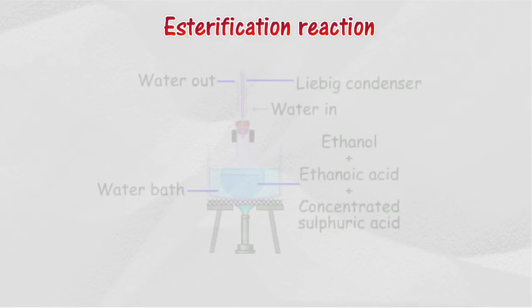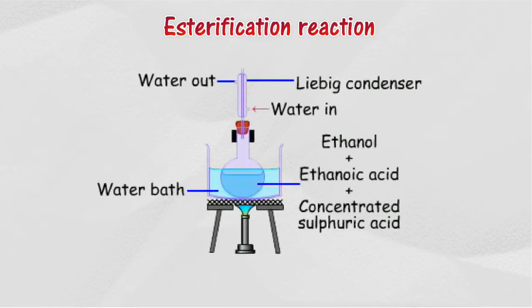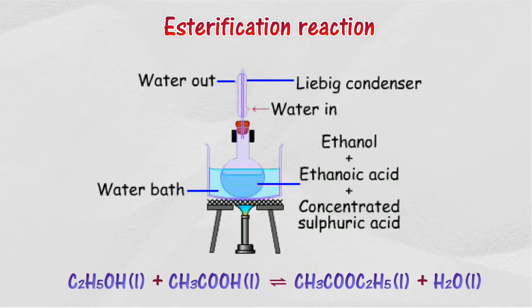Esterification reaction. An esterification reaction occurs when ethanol is heated under reflux with organic acid such as ethanoic acid in the presence of concentrated sulfuric acid as a catalyst. A fragrant compound that smells like fruit is produced. This compound is called an ester.